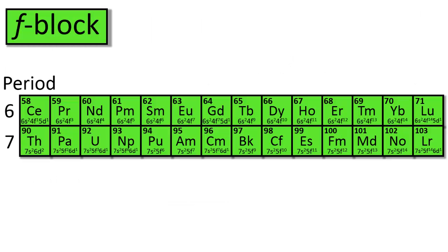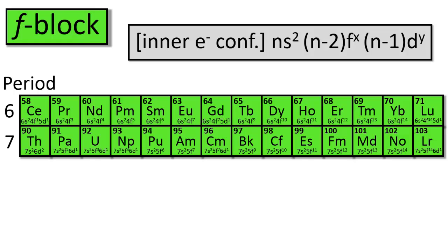And finally, let's turn our attention to the f-block metals, which include the lanthanides and actinides, collectively known as the inner transition metals. For similar reasons, some of these metals also have anomalies in their electron configurations. But in general, the electron configuration of an f-block metal will be the inner electron configuration, two electrons in the ns orbital, some electrons in the n-2 f-orbitals, and in some cases some electrons in the n-1 d-orbitals.